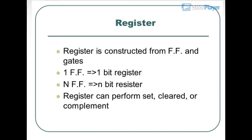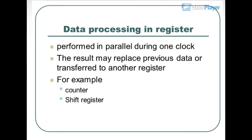RTL is specified by the following three components: the set of registers in the system, the operations that are performed on the data stored in the registers, and the control that supervises the sequence of operations. A register is constructed from flip-flops and gates. One FF equals one bit register; N FFs equals an N-bit register. Registers can perform set, clear, or complement data processing in parallel during one clock. The result may replace previous data or transfer to another register, for example in a counter.